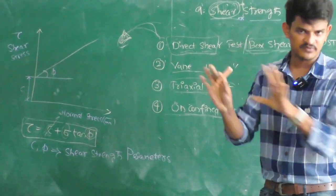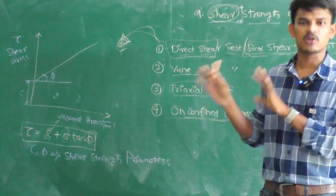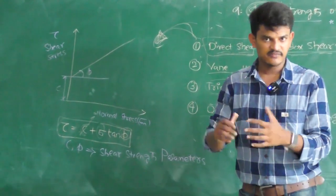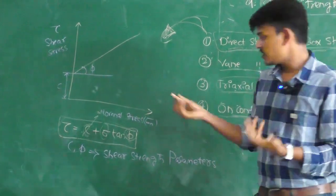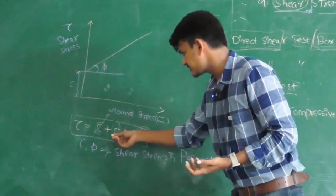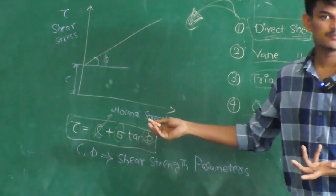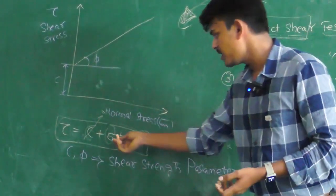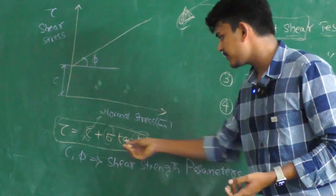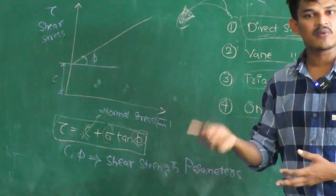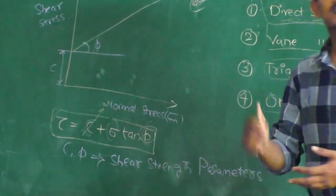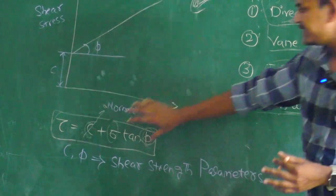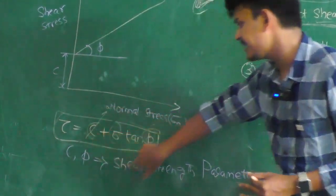Basically, shear strength depends on the type of soil — cohesive or non-cohesive. For example, if it is sandy soil, the C value will be zero because sandy soil is cohesionless. It will depend on the normal stress applied and the frictional resistance of that particular soil sample. So basically it depends on C and phi.